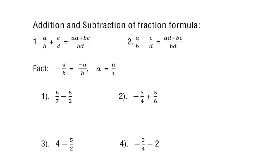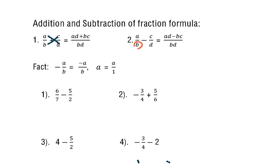Let's look at this formula and find the pattern. The denominator is B times D — you multiply the denominators. For the numerator, you cross multiply: A times D and B times C, then add them at the top. For subtraction, same thing — denominator is B times D, and the numerator is A times D minus B times C.